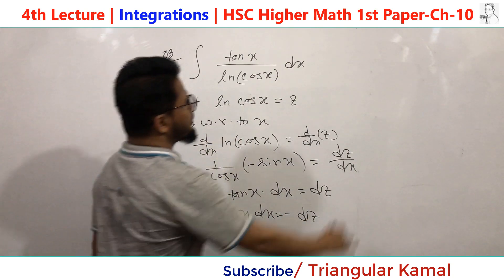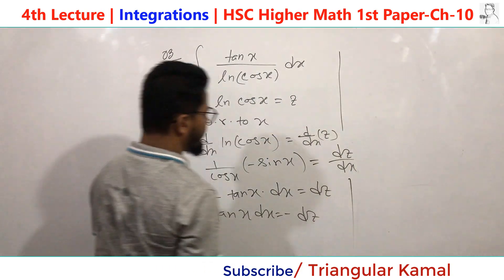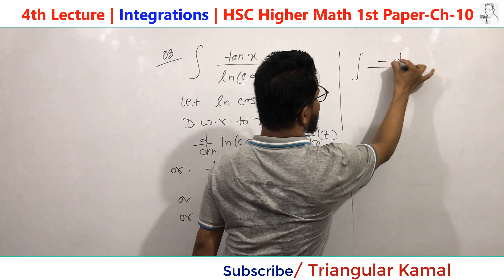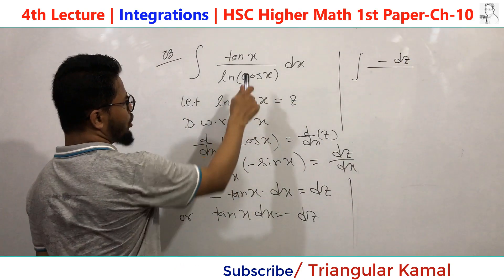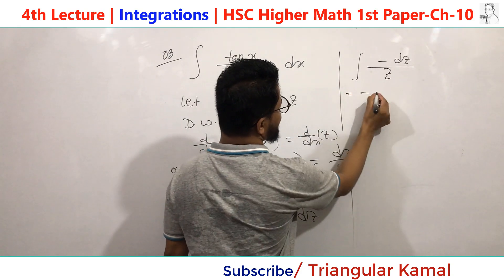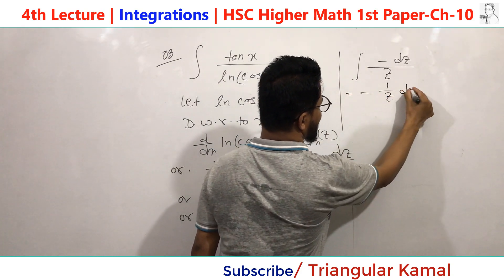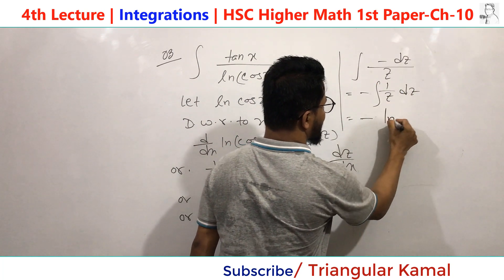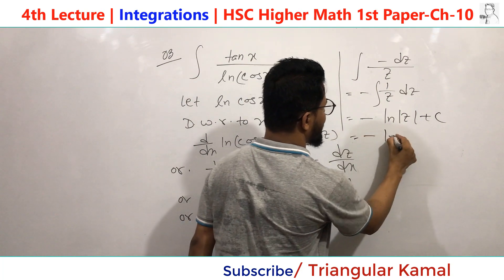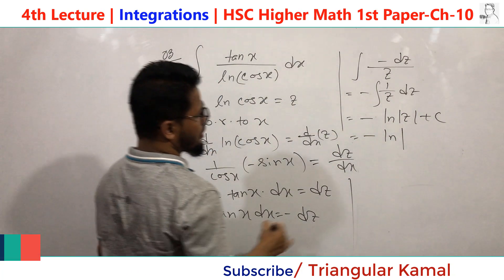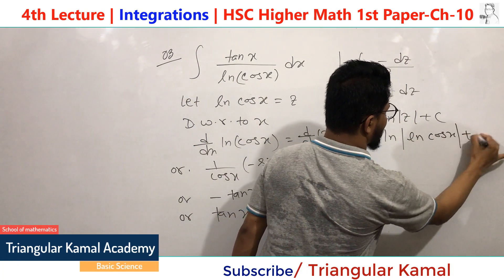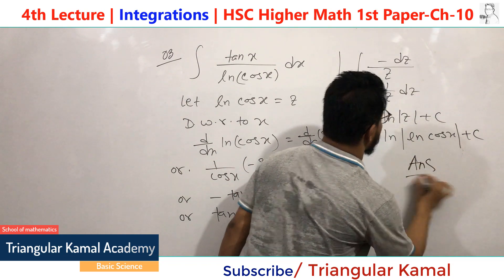Now apply: tan(x) dx = −dz and ln(cos(x)) = z. The integral becomes ∫z · (−dz) = −∫z dz... Actually substituting, we get −z + c. Using the value z = ln(cos(x)), our final answer is −ln(cos(x)) + c.